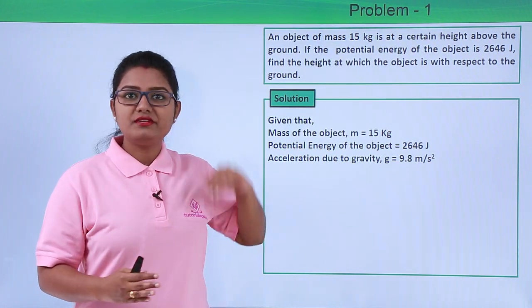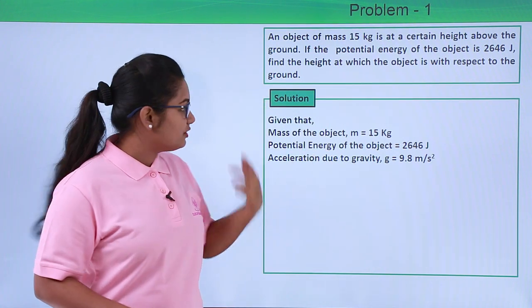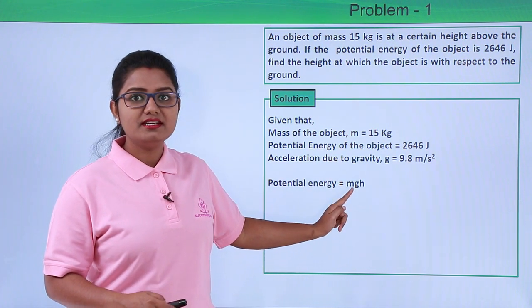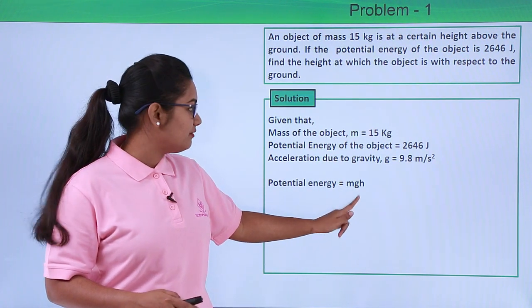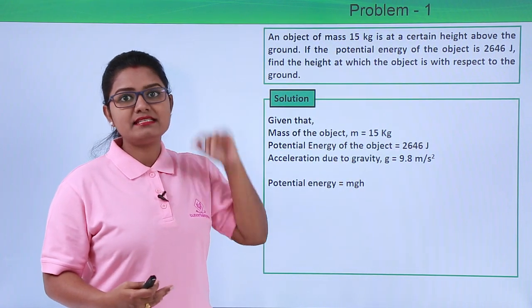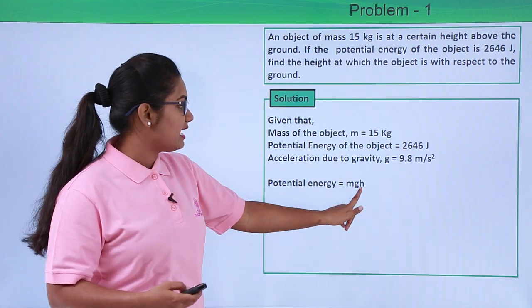That expression is potential energy equals mgh, where m is the mass of the body, g is the acceleration due to gravity, and h is the height at which the body is placed above the ground. We have all these values except the height of the body, so we can easily find out the height.